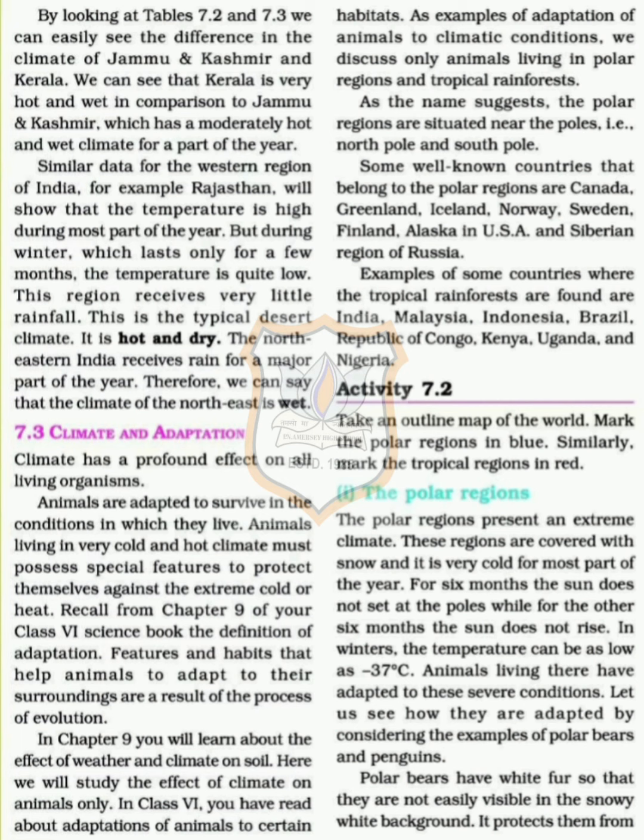As the name suggests, the polar regions are situated near the poles — the North Pole and the South Pole. Some well-known countries that belong to the polar region are Canada, Greenland, Iceland, Norway, Sweden, Finland, Alaska in the USA, and the Siberian region of Russia. Examples of countries where tropical rainforests are found include India, Malaysia, Indonesia, Brazil, the Republic of Congo, Kenya, Uganda, and Nigeria.